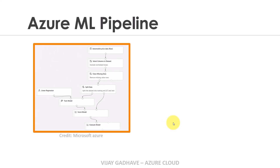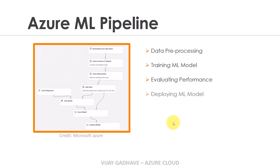So this is how a sample machine learning pipeline looks like. This pipeline has three steps: data processing, training the machine learning model, and evaluating the performance. Note that deploying the model and monitoring the performance are not included in this particular example pipeline.